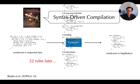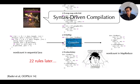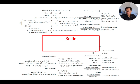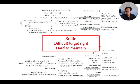Anyone in the syntax-driven compilation business will ask why there are so many rules. This is a very simple program that only does word counting in sequential Java, and it already requires 22 different pattern matching rules. This is a pioneering piece of work that shows it is possible to do such translation from sequential Java into MapReduce. But writing these rules is just hard. They are brittle — we never know whether we missed rules that would lead to an incomplete translation. They are difficult to get right, and if any translation turns out to be wrong, it's hard to catch. They are also hard to maintain.